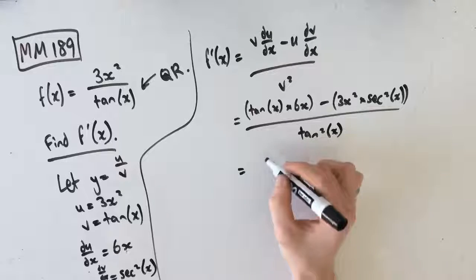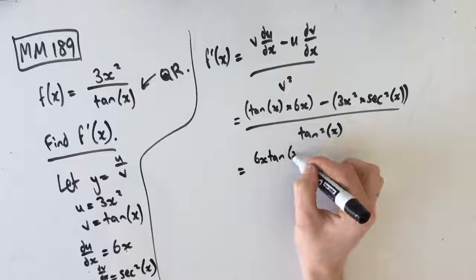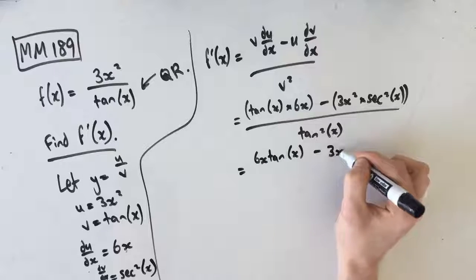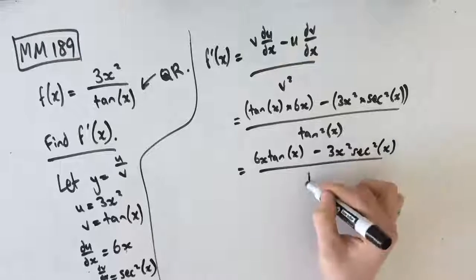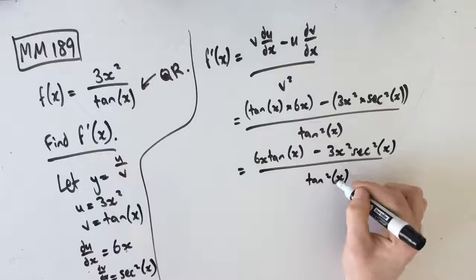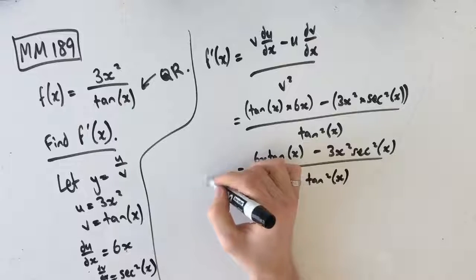From here, I'm just going to kind of simplify it a little bit further. It's not going to do too much, but there's not much you can do with this sort of simplification. Tan squared x. Awesome. I'm just going to leave it like that. That's fine.